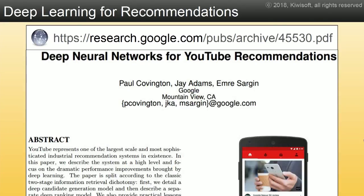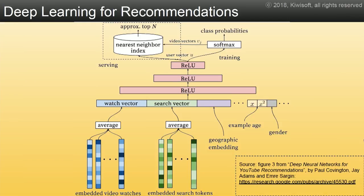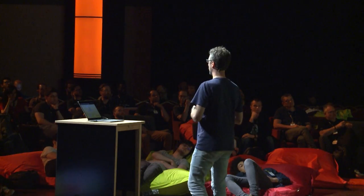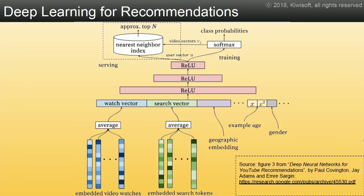YouTube's research team published a paper in September 2016 called 'Deep Neural Nets for YouTube Recommendations.' They just use a neural network. At the bottom, you feed the neural net the previous videos the user watched, some of the searches they did, what country they're in, their age, gender, or even combinations of these features. It's not a very deep neural net — pretty wide at the bottom — and it gradually goes up to the top where we predict the next video the user is going to watch, trained on all the user's history.